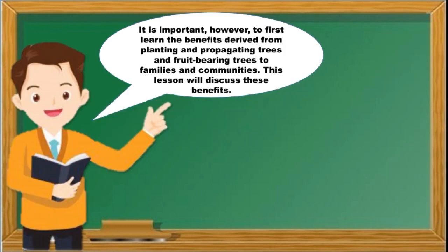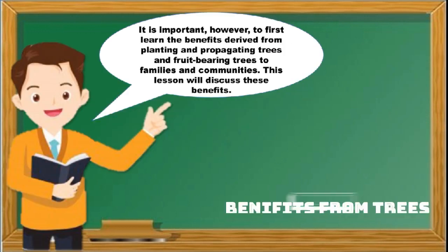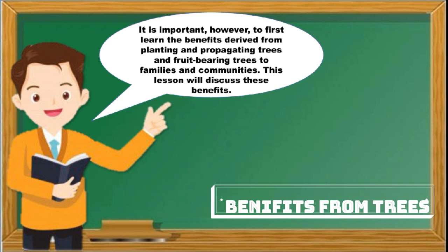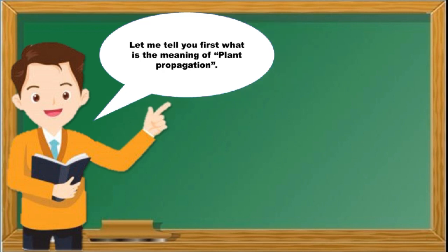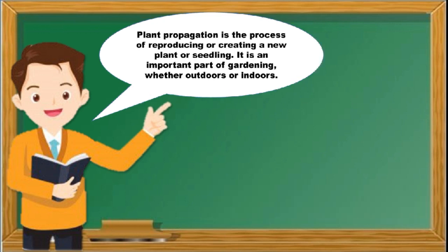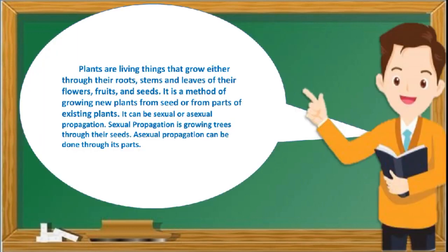Pupils should be able to demonstrate understanding of scientific practices in planting and propagating trees and fruit bearing trees. It is important to first learn the benefits derived from planting and propagating trees and fruit bearing trees to families and communities. Plant propagation is the process of reproducing or creating a new plant or seedling. It is an important part of gardening, whether outdoors or indoors. Plants are living things that grow through roots, stems, leaves, flowers, fruits, and seeds.